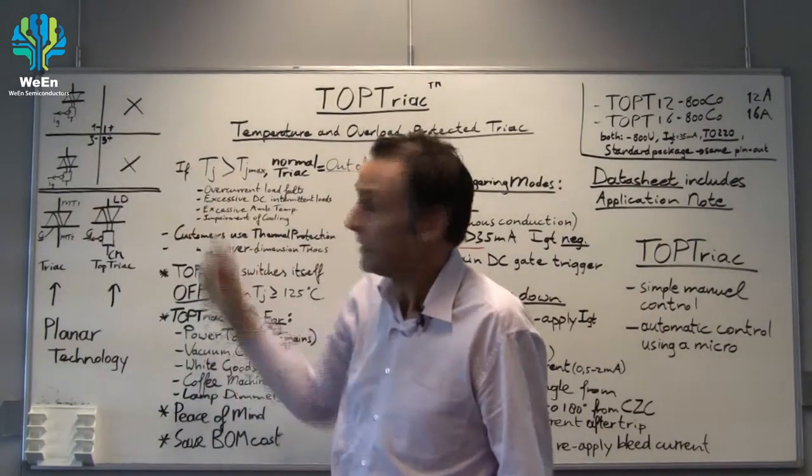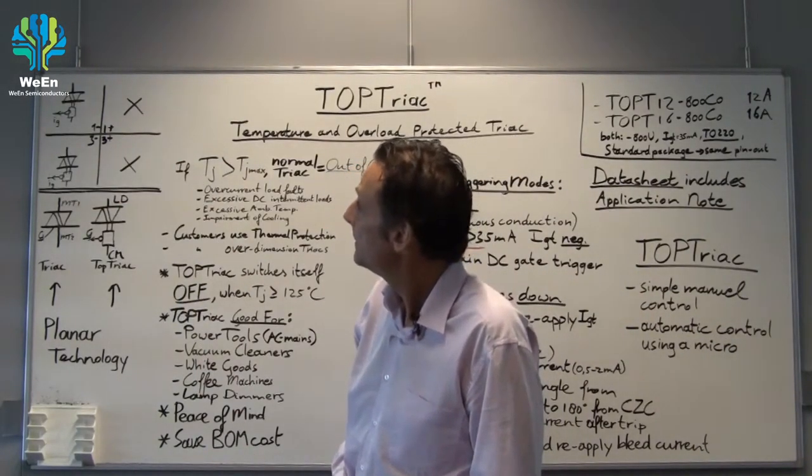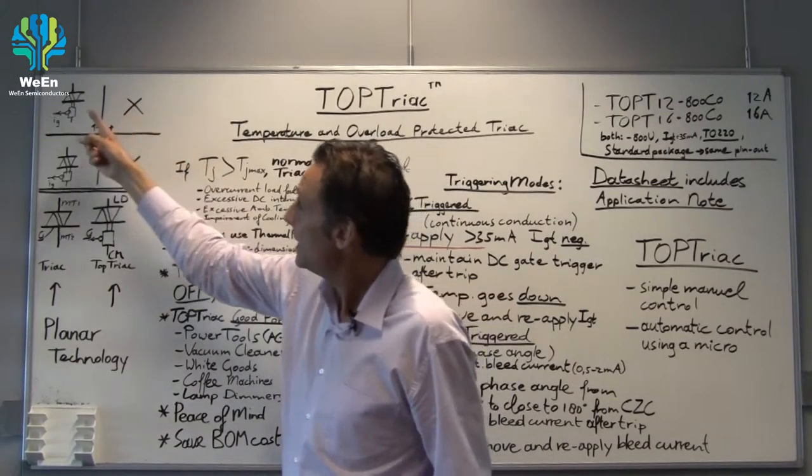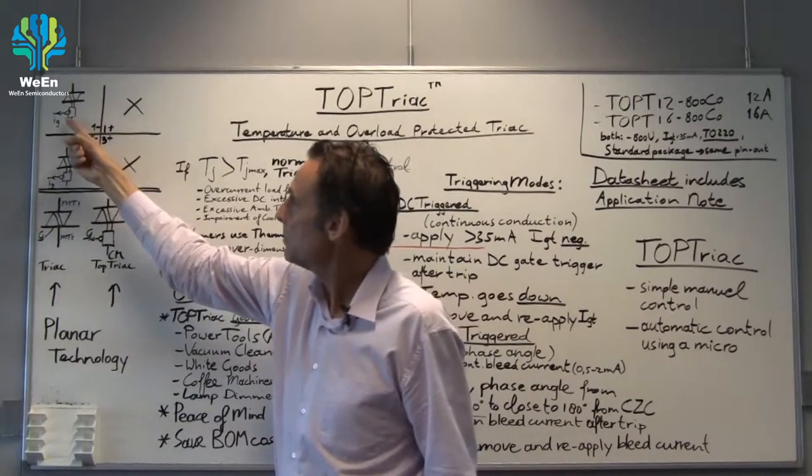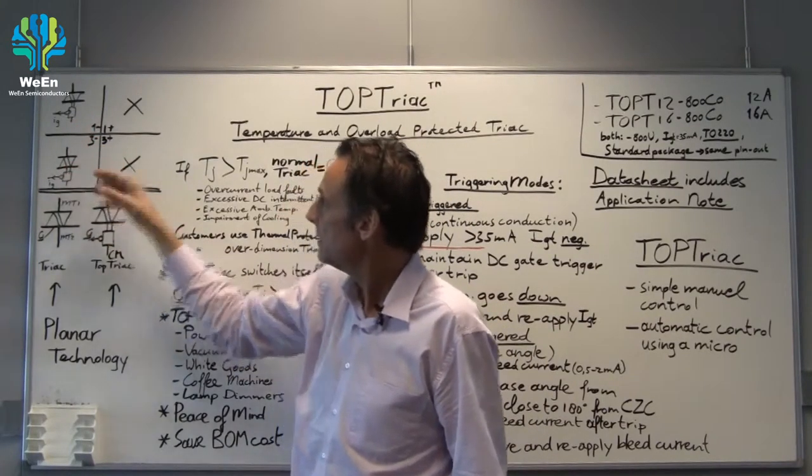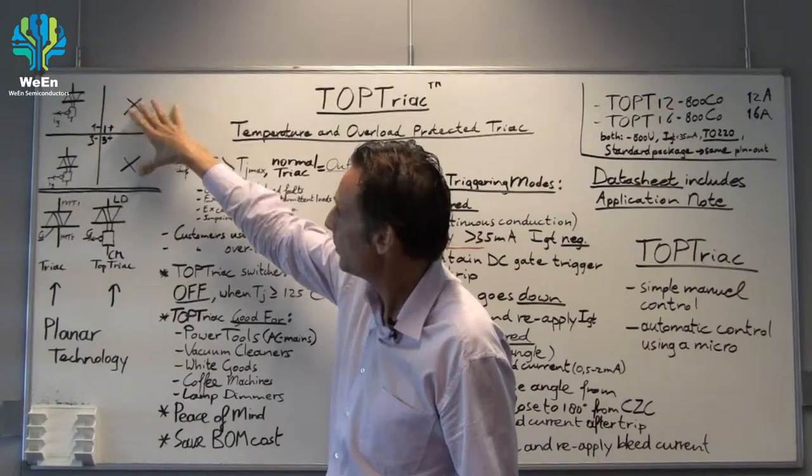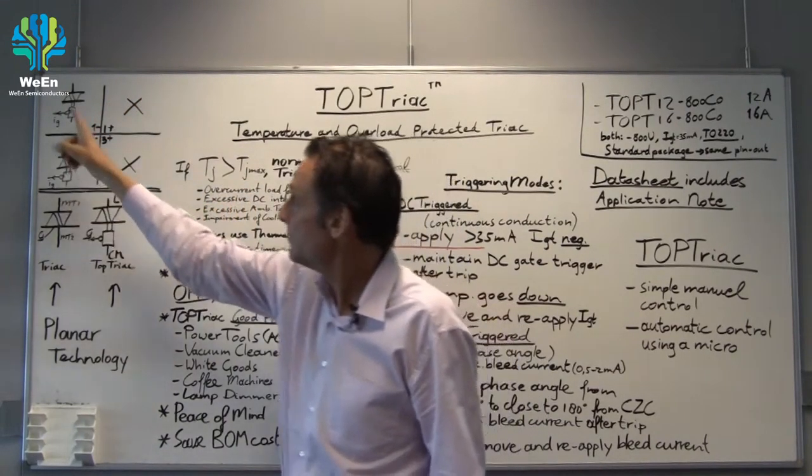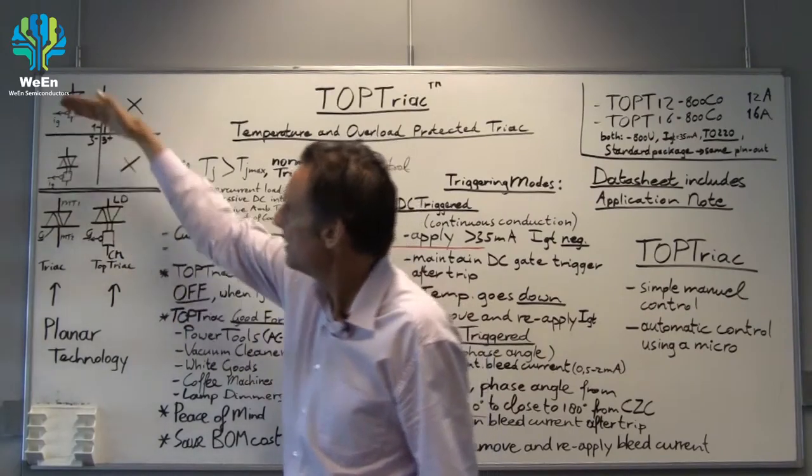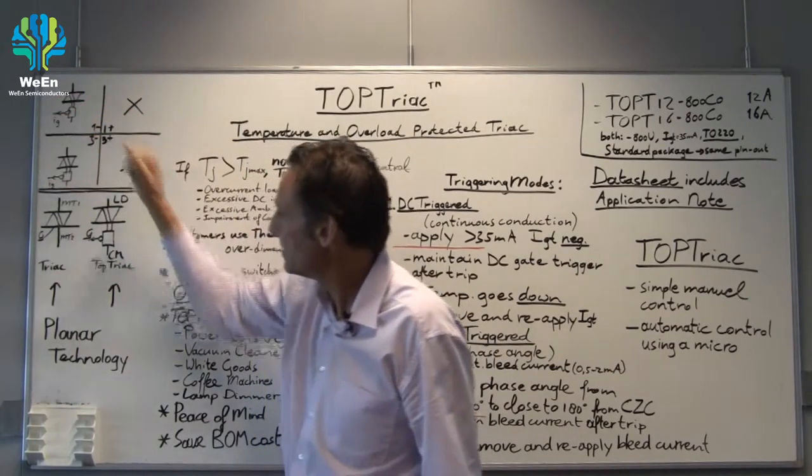A TOP TRIAC is a two quadrant TRIAC. It means it will only trigger in the two quadrants on the left with exclusively negative gate current. These two quadrants have positive gate current and there the TOP TRIAC will not work, so you have to apply negative gate current. This is the positive cycle, this is the negative cycle.